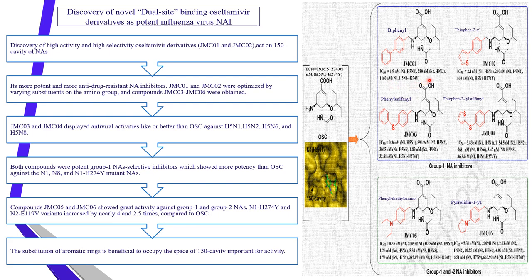We can see the IC50 inhibitory concentration at 50% of the derivatives compared to oseltamivir — they are very potent and show more inhibition on the resistant strain compared to oseltamivir. In the lower part of the picture we can see JIMIC-05 and JIMIC-06. JIMIC-05 has a phenyl diethylamino group at carbon 5, and JIMIC-06 has a pyrrolidin-1-yl group. Their AC50 against the resistant virus is approximately five times more potent than oseltamivir, and they act on both group 1 and group 2 neuraminidases.